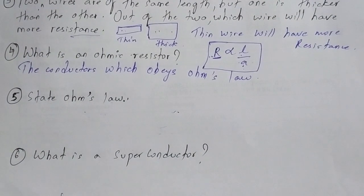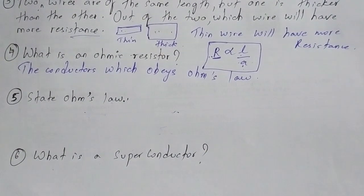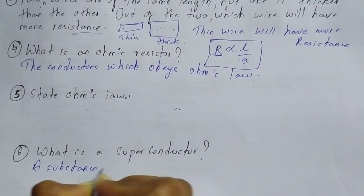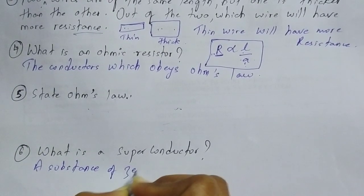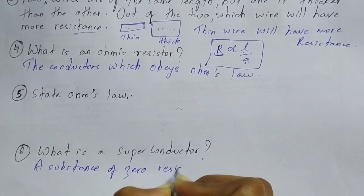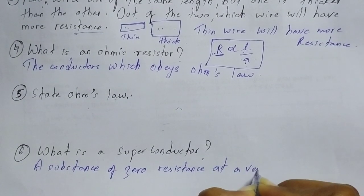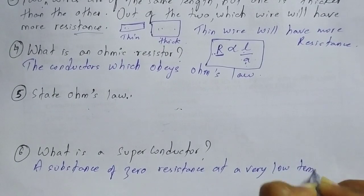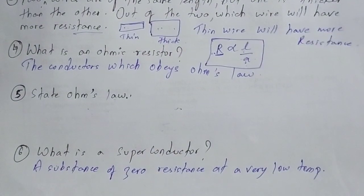Moving on to the second last question, question 6: What is a superconductor? A superconductor is a substance of zero resistance at a very low temperature. That is the definition of a superconductor.